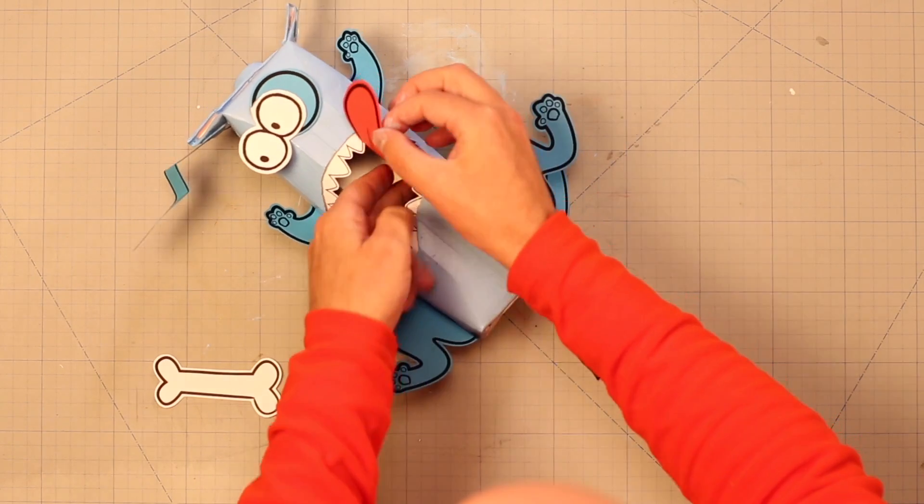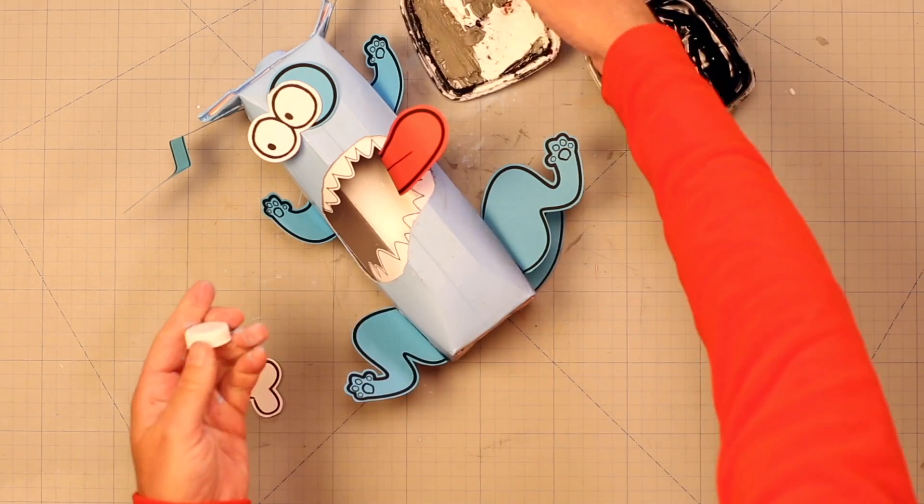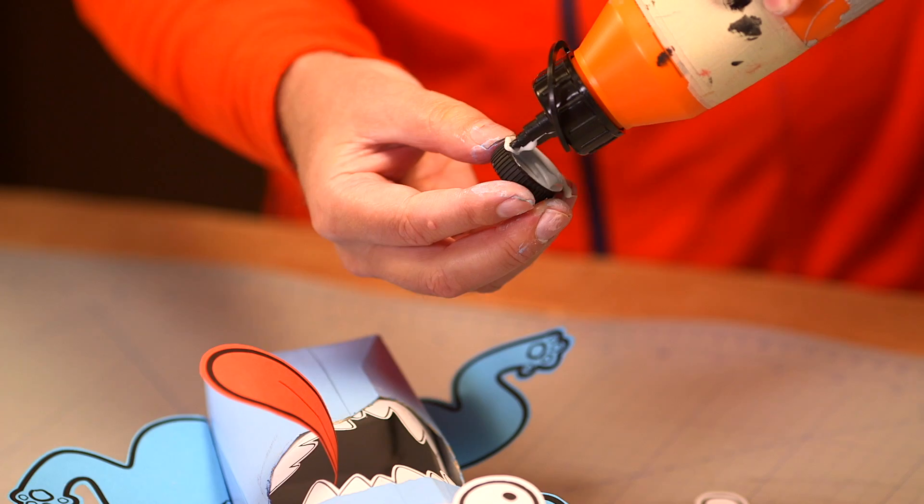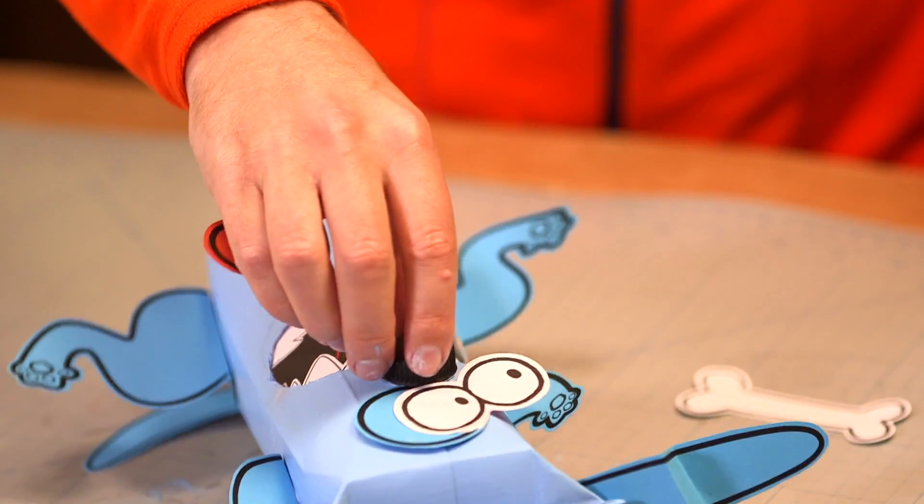The tongue goes in a bit crooked. Finally, we paint up a bottle cap and stick it on as a nose.